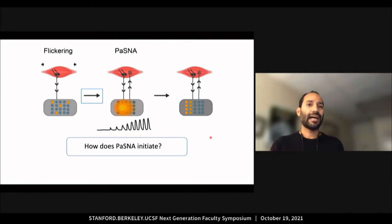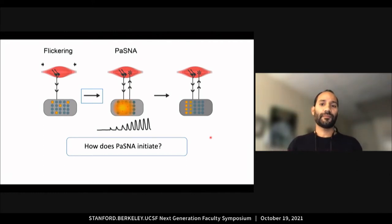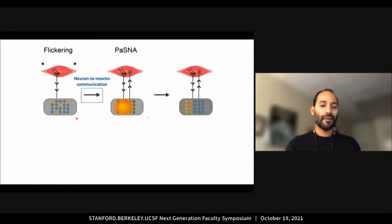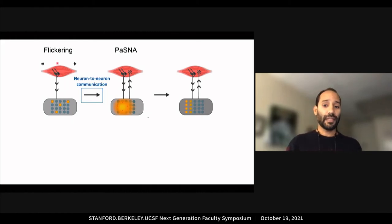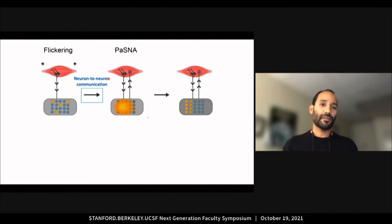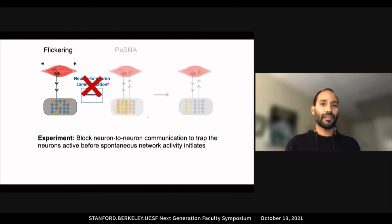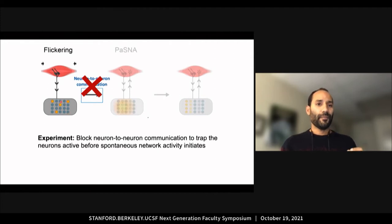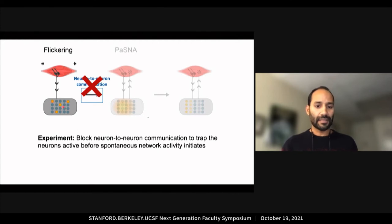We next asked how does this process start? To do this, we wanted to find what neurons become active first. Based on data that I don't have time to share, we know that the transition from flickering to PASNA depends on neuron-to-neuron chemical communication. We reasoned that by blocking this communication, we could trap embryos at the flickering stage, thereby revealing the neurons that are selectively active before PASNA.